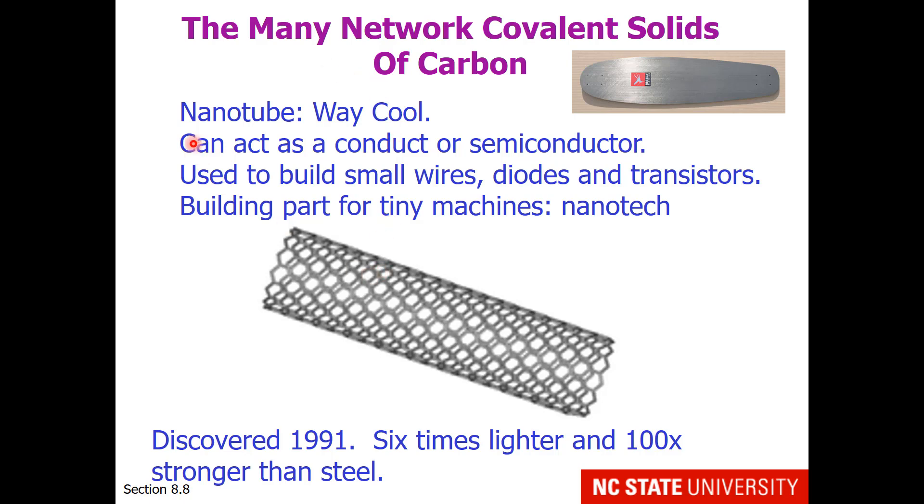Another form of carbon is known as the nanotube. This is a sheet of graphite, but rolled into a tube. Nanotubes, depending on which way they are rolled, can act as a conductor or semiconductor, which means you can use them to build small wires, diodes, and transistors. So these can be building parts for very tiny machines. Now, while we don't yet have tiny machines that go and deliver medicine specifically to different cells, graphite rods or filaments have been used in coatings to make extremely wear-resistant paints, like for your skateboard.